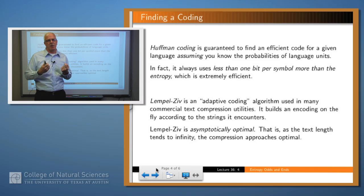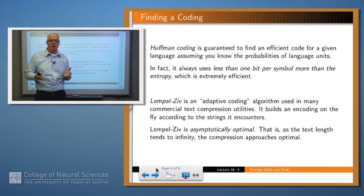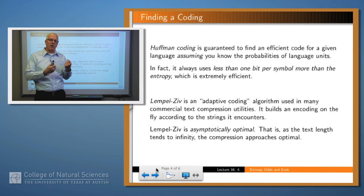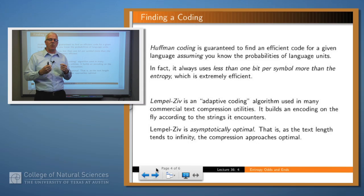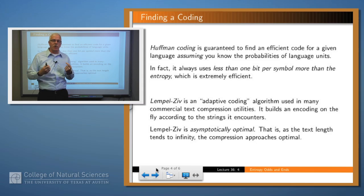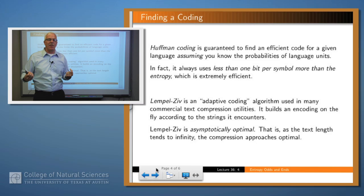But suppose you don't know the probabilities of symbols in the language. Then you can use a different method called adaptive coding. If you apply a compression algorithm to your files, what you'll probably be using is Lempel-Ziv, or the LZ algorithm. The way LZ works is it builds a table based not on the probabilities of symbols in the language in general, but on the probabilities of the symbols it's encountered in the text it's compressing. Lempel-Ziv is asymptotically optimal, meaning that if you compress larger and larger quantities of text, you get closer and closer to an encoding which matches the entropy.